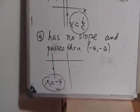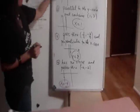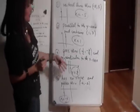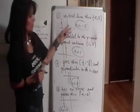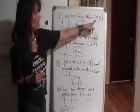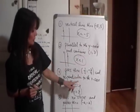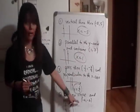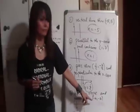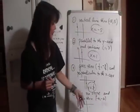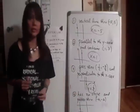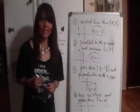So if you notice, to get an equation of a vertical line going through a point, all we do is grab the first coordinate of the point, and that's how you write an equation of a vertical line.